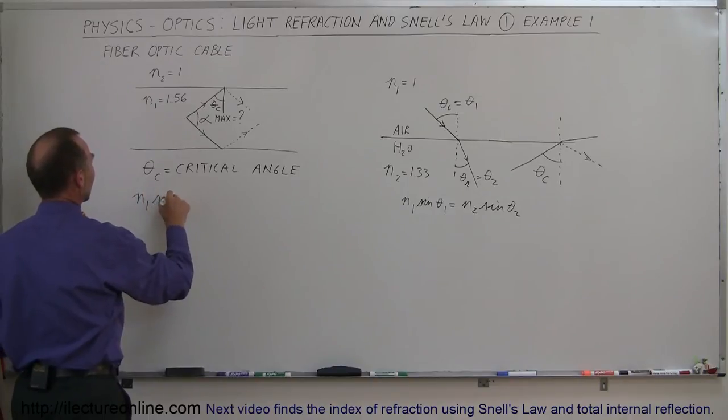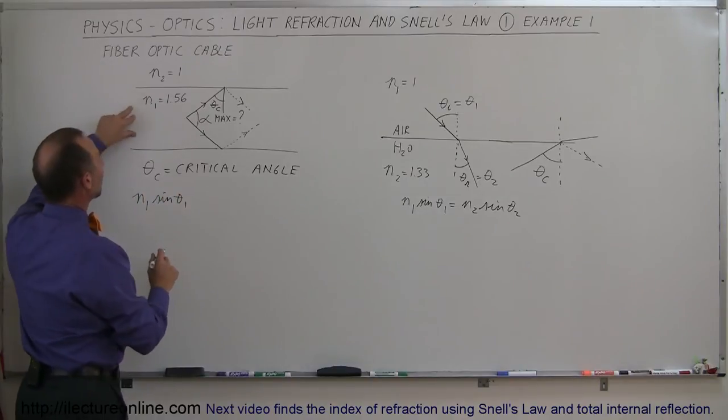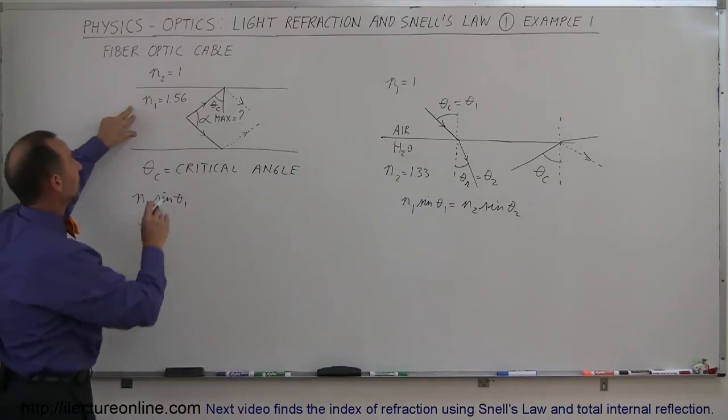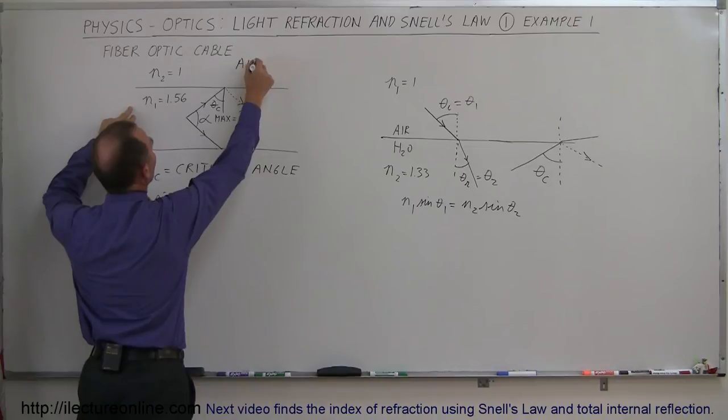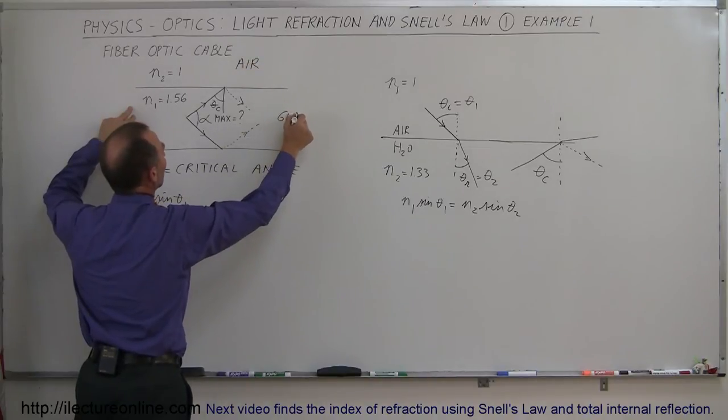We say n1 times the sine of theta1, so one is the region inside the fiber optic cable, two is the region outside the fiber optic cable. Let's say that outside the fiber optic cable, we have air. In the fiber optic cable, we have glass.